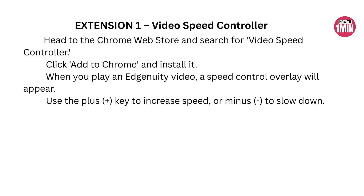Here's how to use Video Speed Controller: head to the Chrome Web Store and search for Video Speed Controller, click Add to Chrome, and install it. When you play an Edgenuity video, a speed control overlay will appear. Use the plus key to increase speed or minus to slow down. It's super easy and gives you full control — way easier than editing videos manually using Premiere or After Effects.